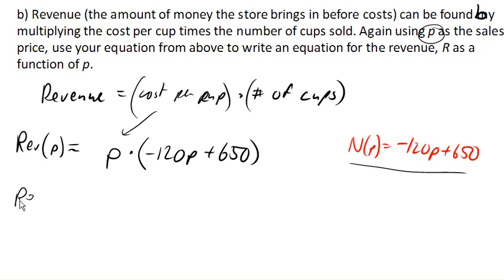If we want to now, we can say my revenue as a function of P is—let's go ahead and distribute here—is negative 120p squared plus 650p. And that is a nice quadratic.